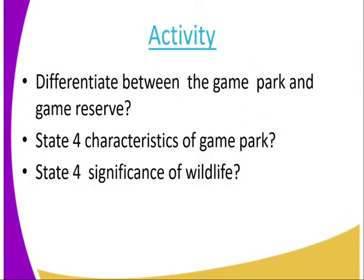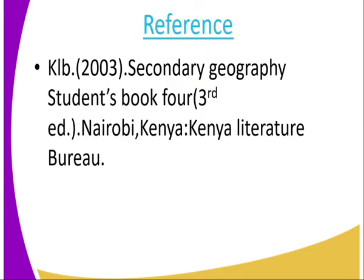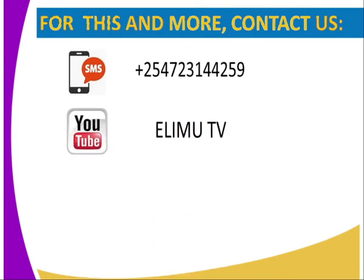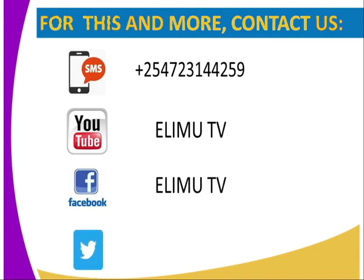Activity: differentiate between the game park and game reserve. Second, state the characteristics of a game park. Third, state the significance of wildlife. For reference, you can use the KLB 2003 Secondary Geography Student Book 4, third edition. You can contact us via SMS, YouTube, Facebook, or Twitter. Stay tuned to Edim TV. Thank you.